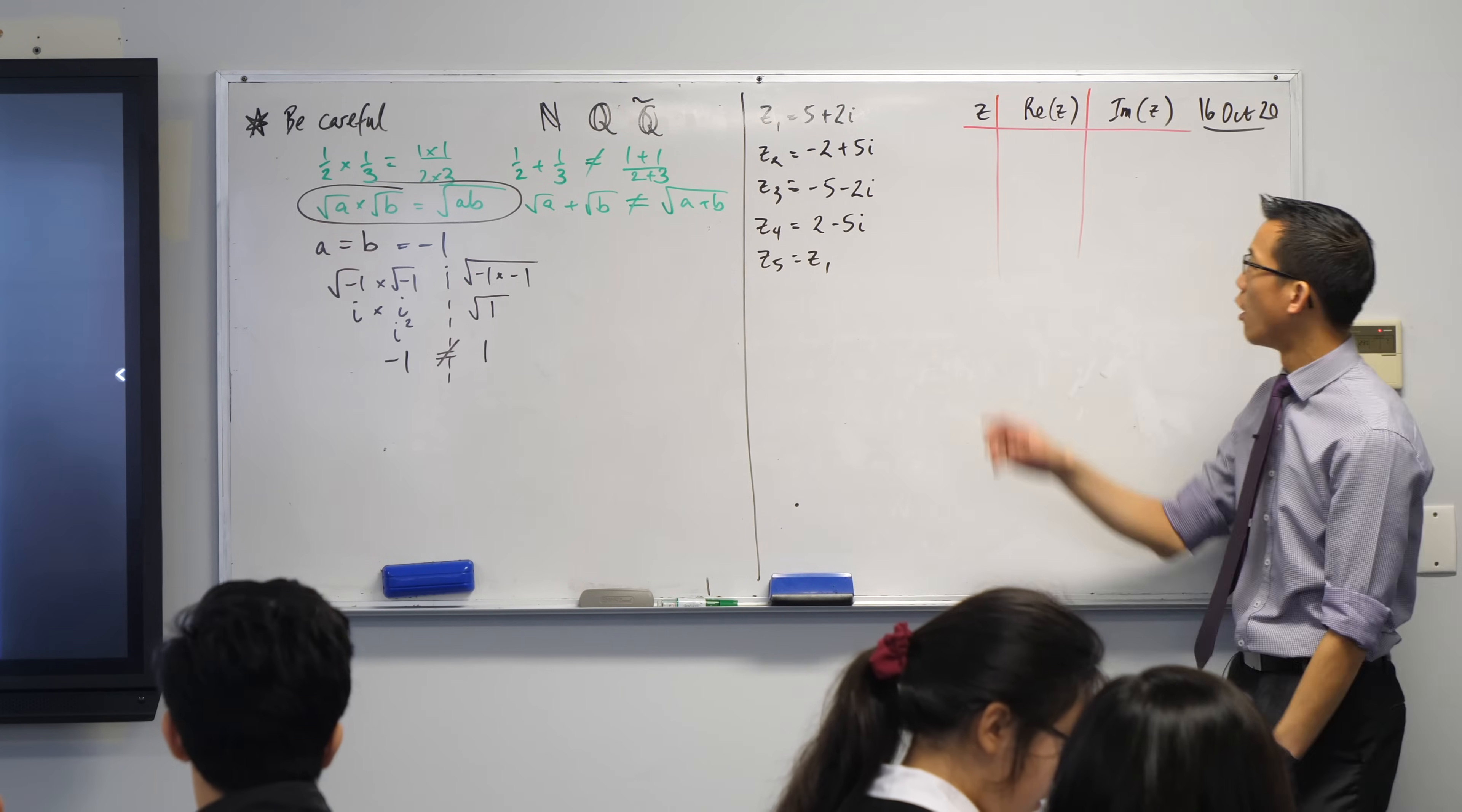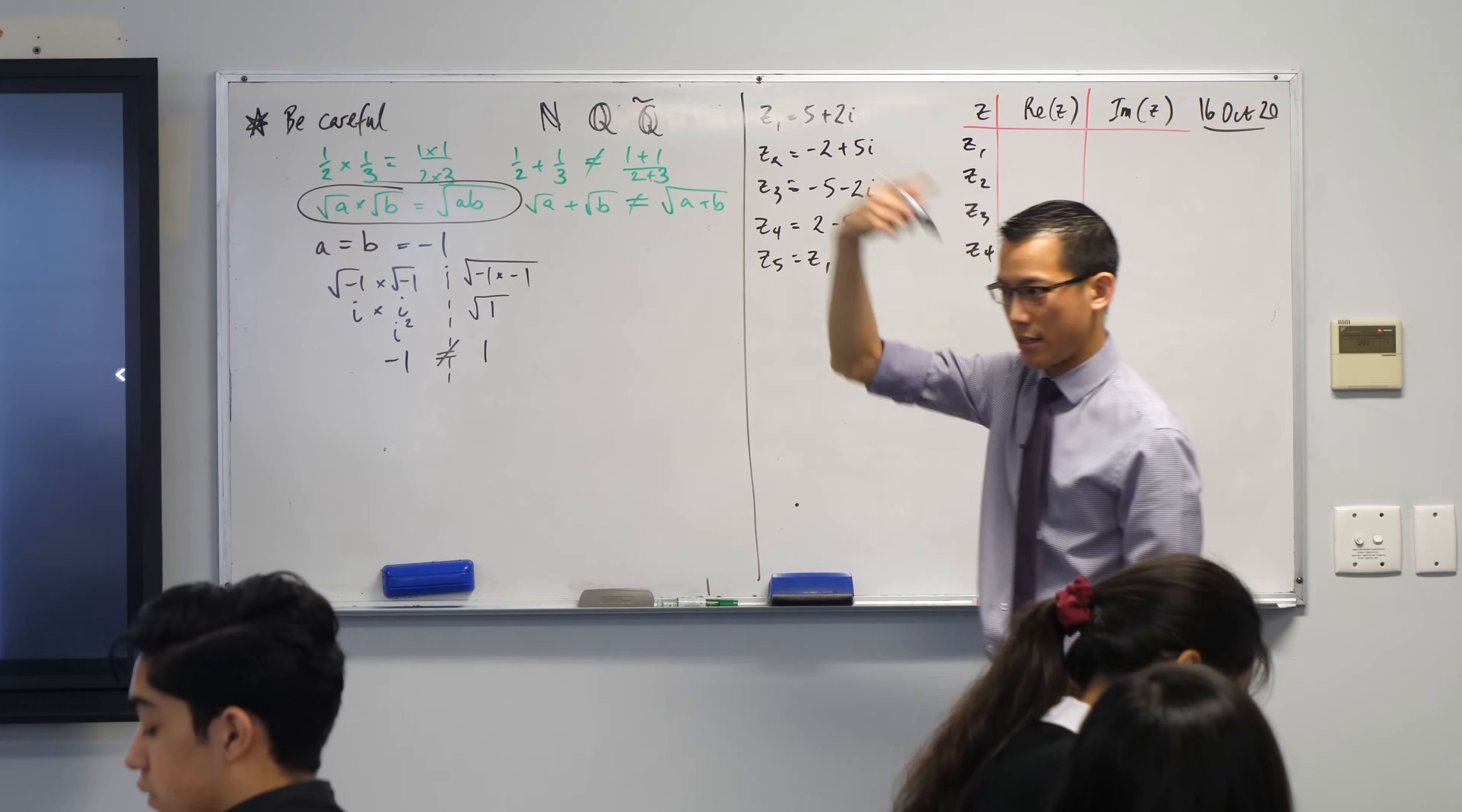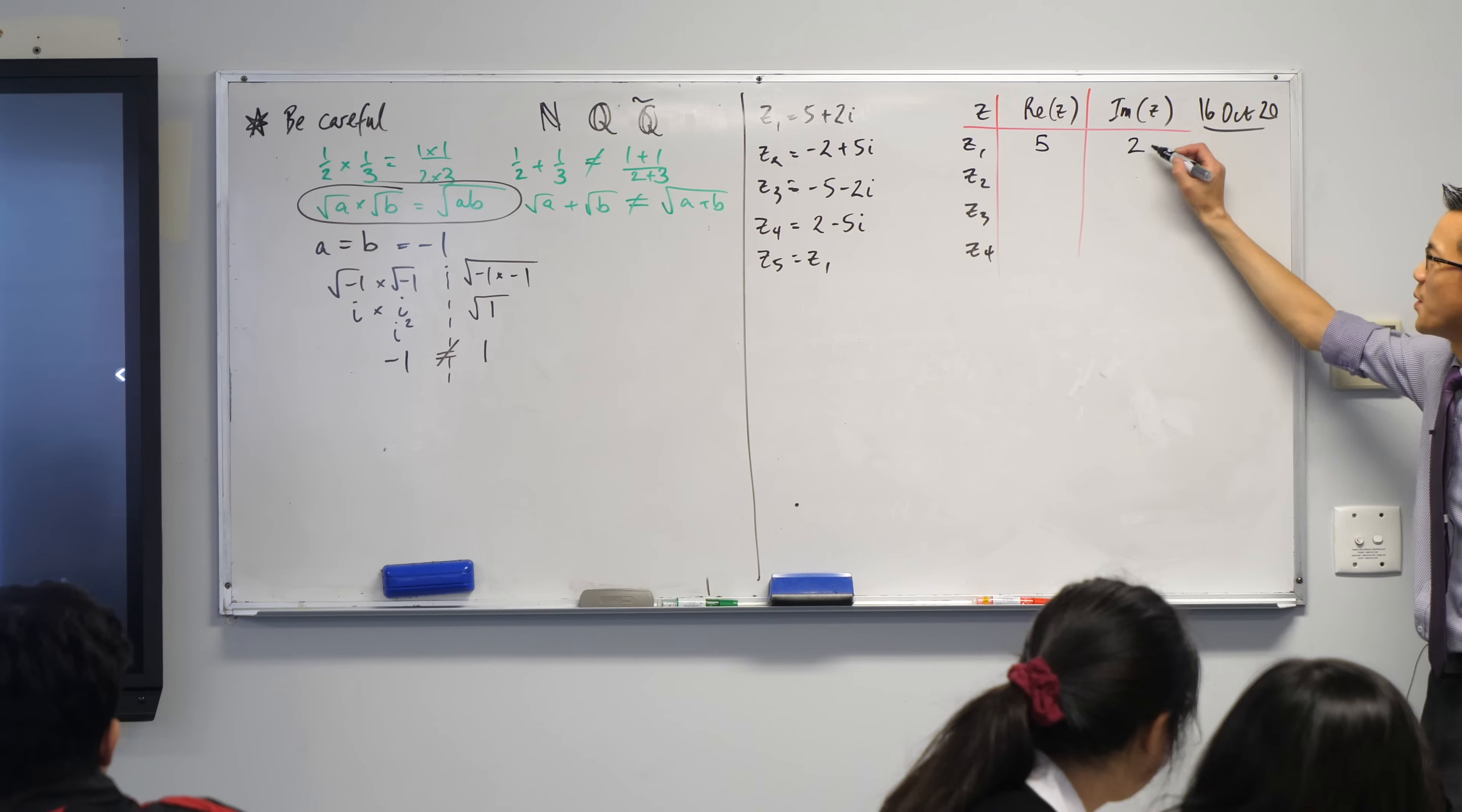Using our language of real and imaginary components, we can separate out. I wonder if you can just do a little exercise with me for each of, and maybe you want to draw this little table for yourself too, for each of the numbers. I'm going to leave Z5 off of this list because it's clearly the same as the top row. For each of these numbers, what's the real part? What's the imaginary part? Start me off, Z1.